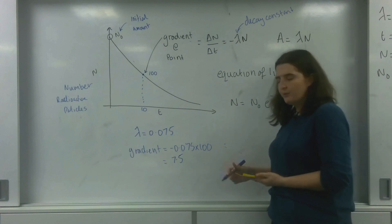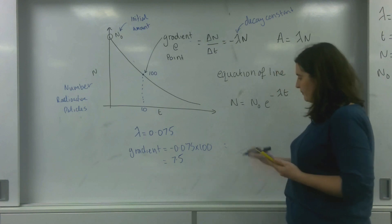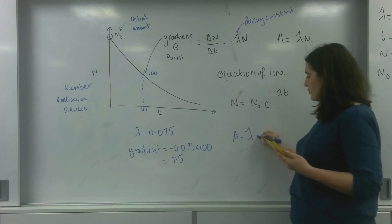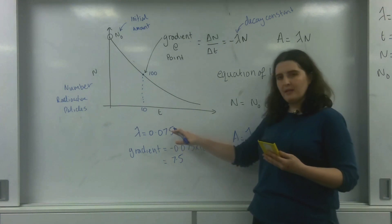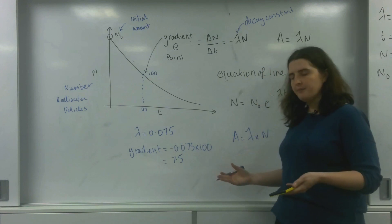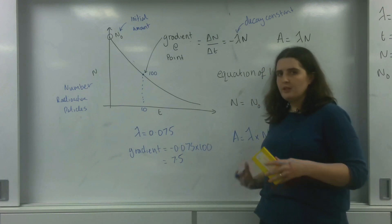Now how we've said before how this related to activity. So activity is the decay constant times by the number of particles. So it is this value here. This whole idea of this gradient. But it's important to realize the units.